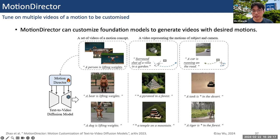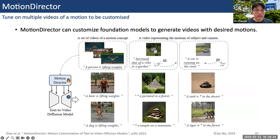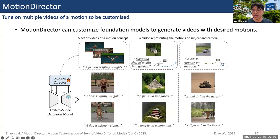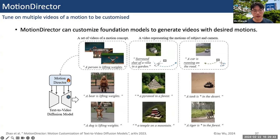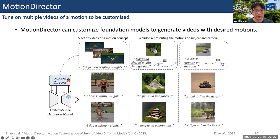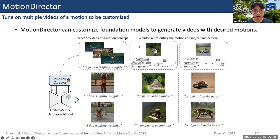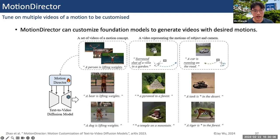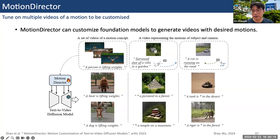So how to let the monkey play golf? Let's give the foundation model some hints — for example, a few videos of the motion of playing golf recorded by humans. What we need to do is tune the foundation model so it can generate the motion of playing golf on a monkey. That's the key idea of Motion Director.